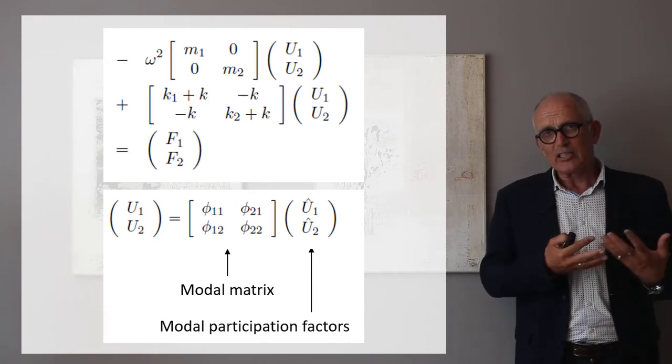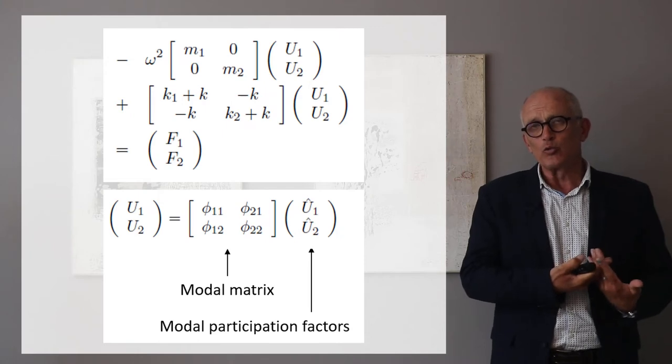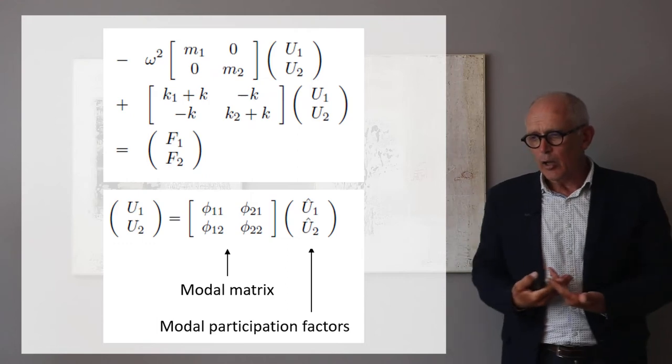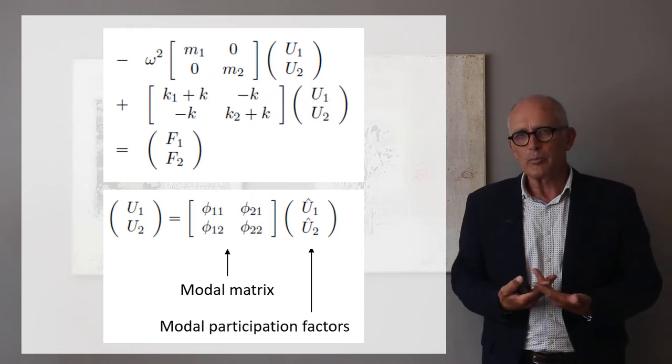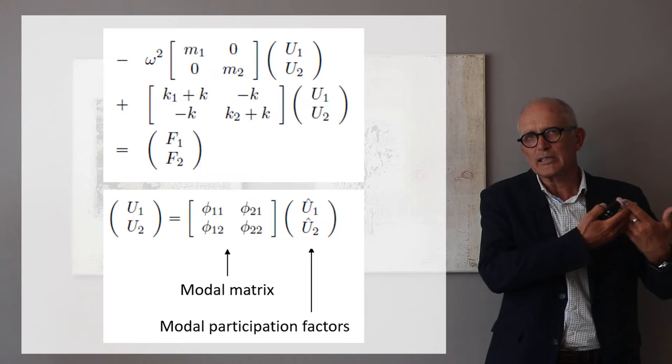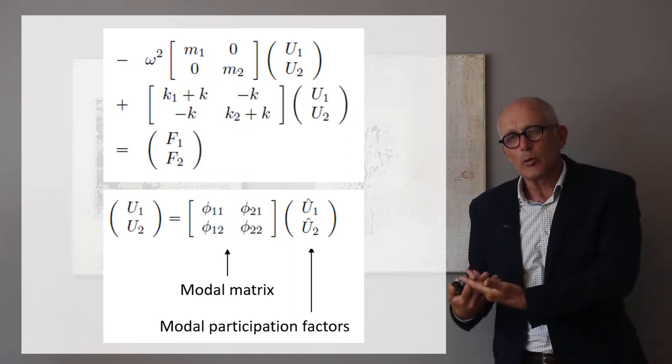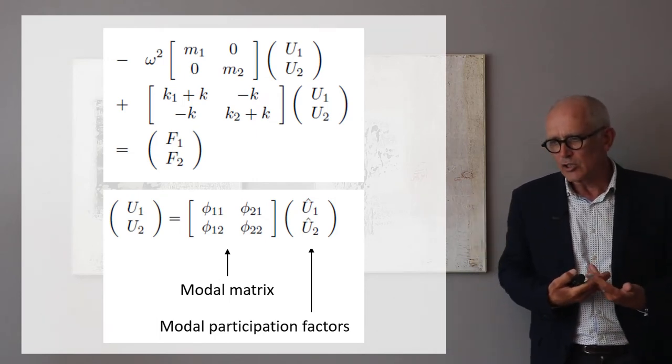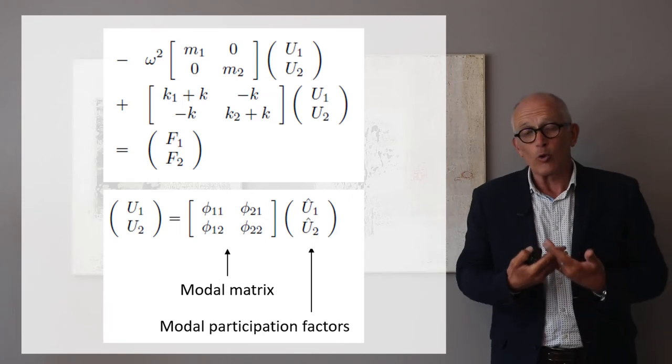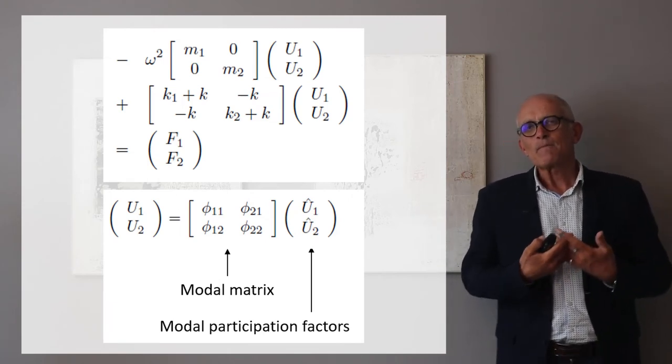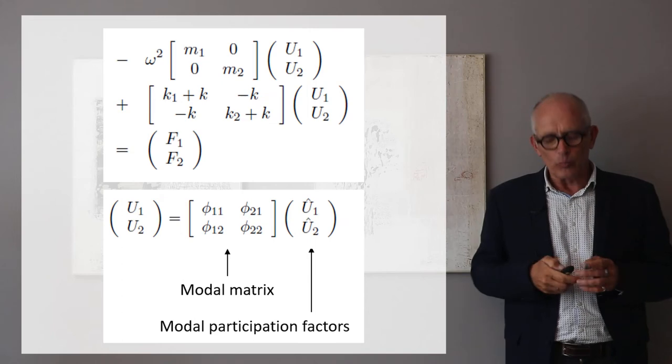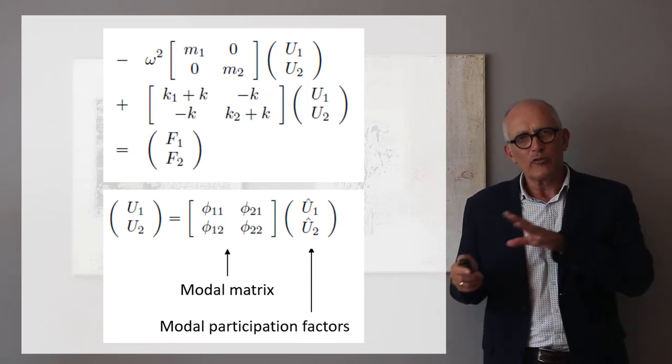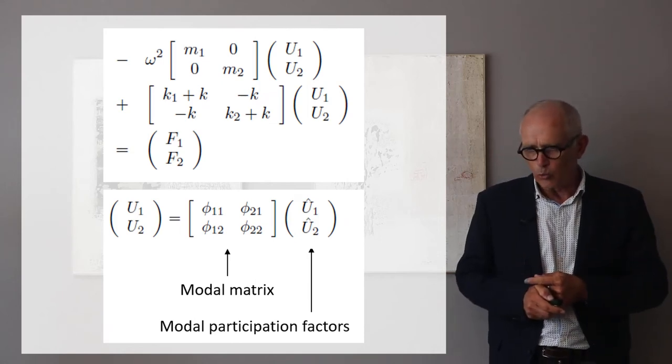And if I can express the displacement u1 u2 as this modal matrix times another vector whose components I call the modal participation factors. So I try to express the displacement as a linear combination of the modes. And the coefficients of that linear combination are called the modal participation factor or the modal displacement. And whatever is modal will be written with a little hat on top. So hat u1 is the modal displacement associated to mode one.